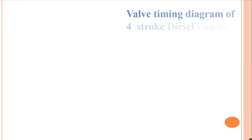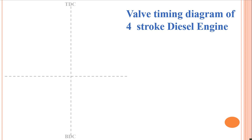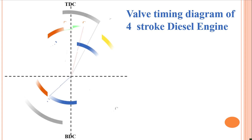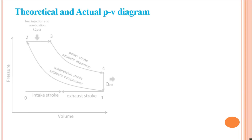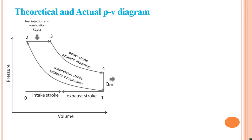Hello friends, today we are discussing the valve timing diagram of a four-stroke diesel engine. Firstly, for the theoretical and actual PV diagram for a compression ignition engine, that is a four-stroke diesel engine, the following assumptions are made for ideal conditions.